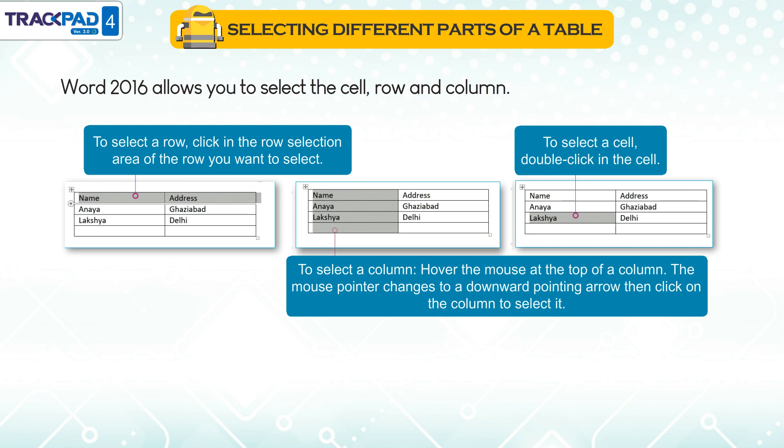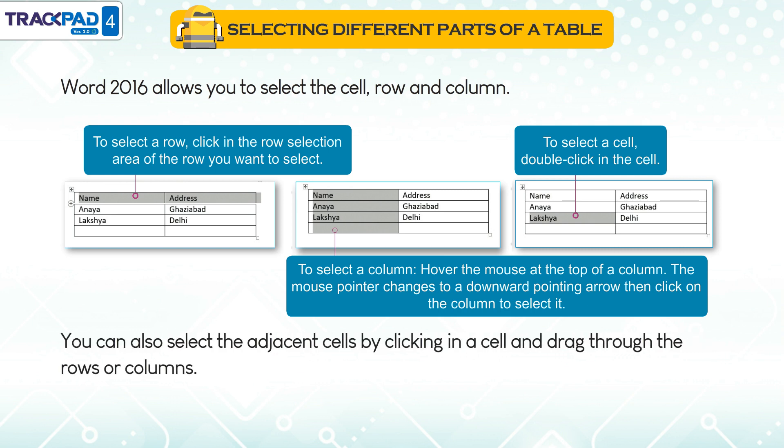To select a cell, double click in the cell. You can also select adjacent cells by clicking in a cell and dragging through the rows or columns.